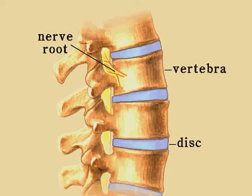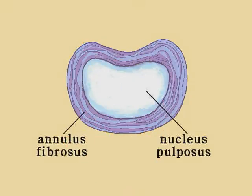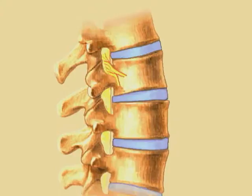Such surgery is very traumatic, expensive, and often accompanied with complications and relapses. The human spine is composed of vertebrae and intervertebral discs, including the nerve roots. A normal intervertebral disc consists of dense annulus fibrosus and soft, flexible, and adaptable nucleus pulposus. The discs provide shock absorption to the spine.